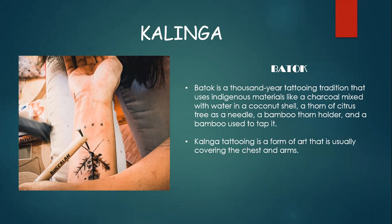We can also proceed to accessories and body ornamentation. The famous body ornamentation in Kalinga is called batok. Batok is a thousand-year tattooing tradition that uses indigenous materials like charcoal mixed with water in a coconut shell, a thorn of a citrus tree as a needle, a bamboo thorn holder, and a bamboo stick used to tap it. In Kalinga, we can find Apo Wang-od, who is already 103 years old and the eldest woman mambabatok in Kalinga.